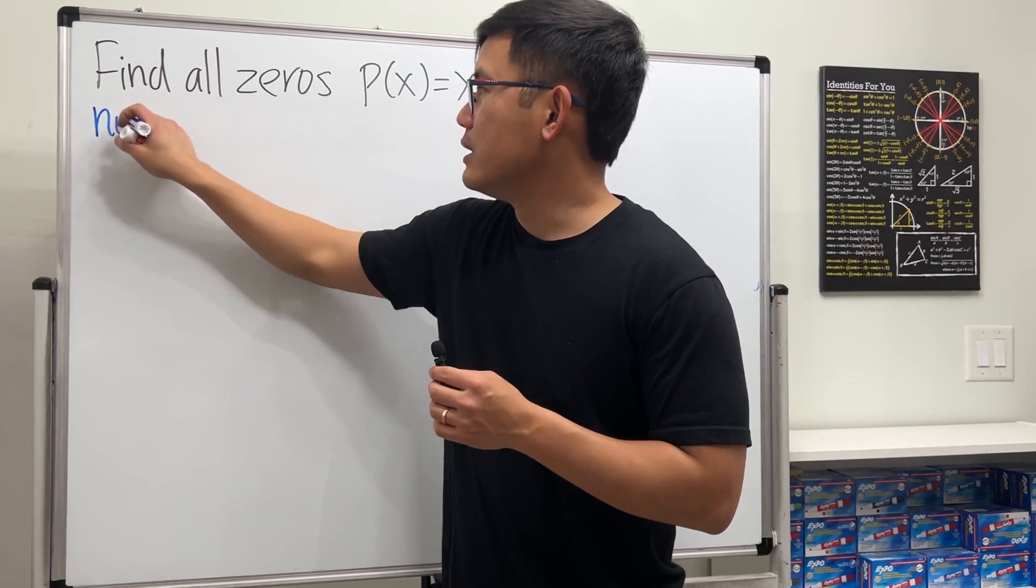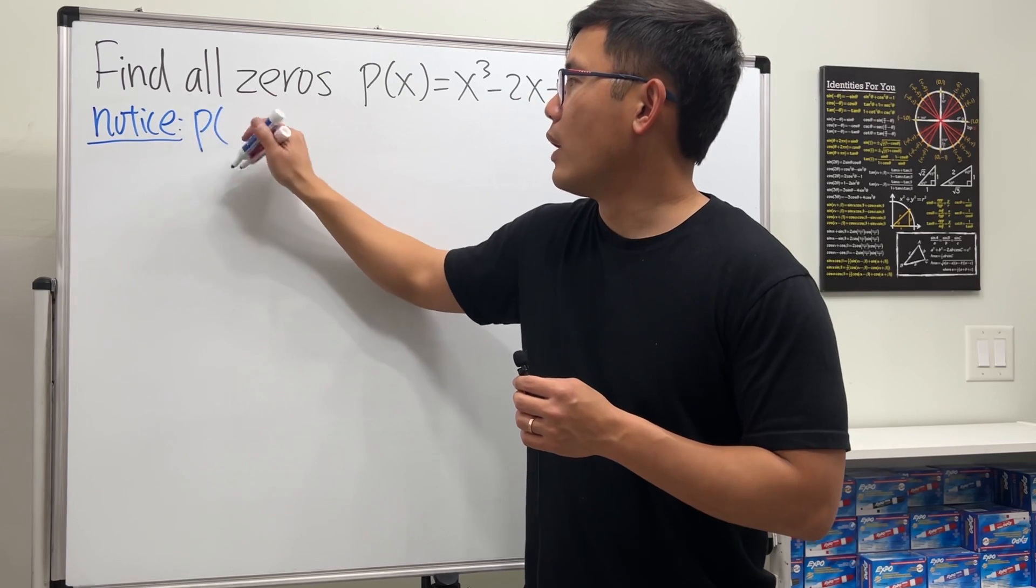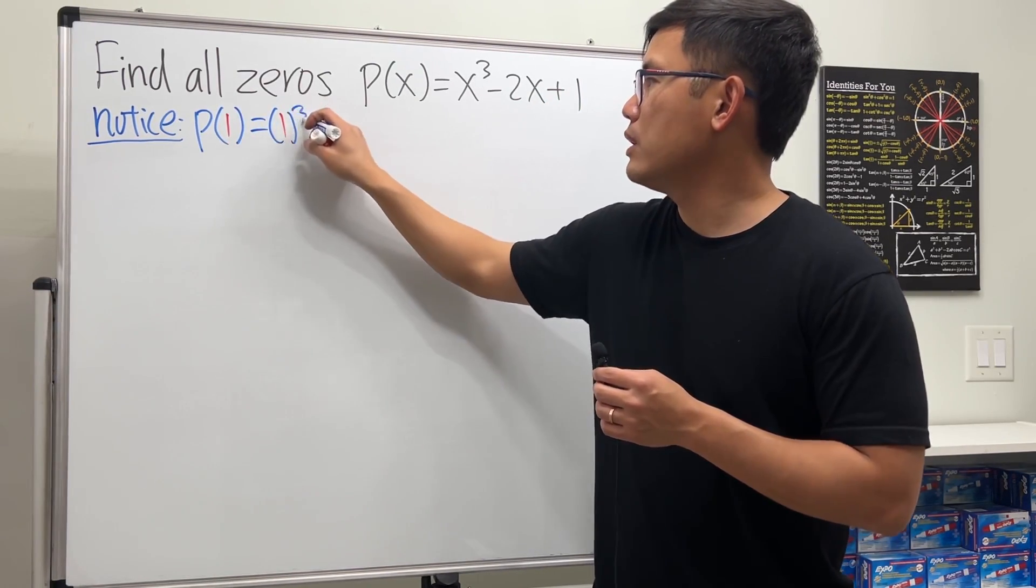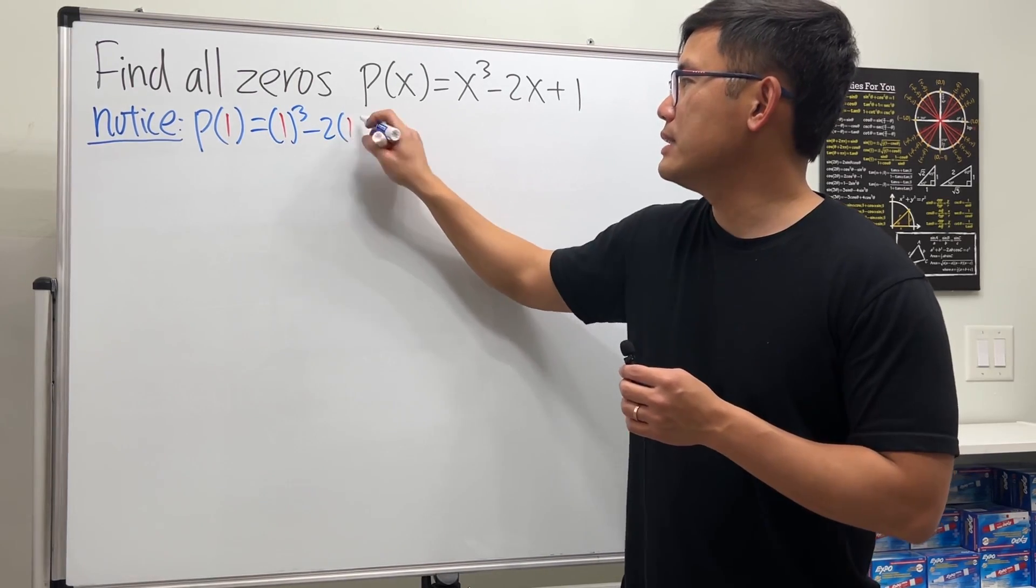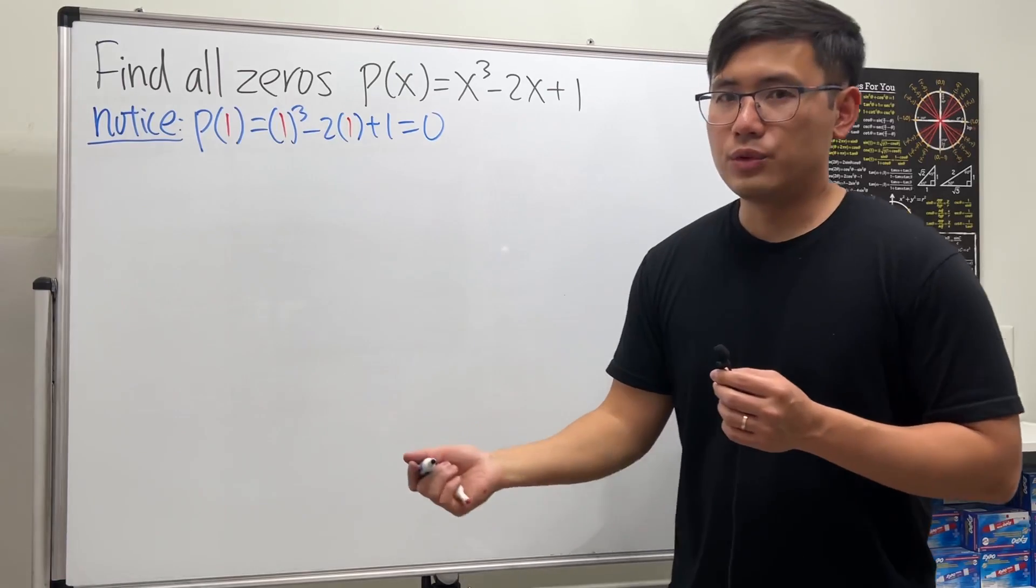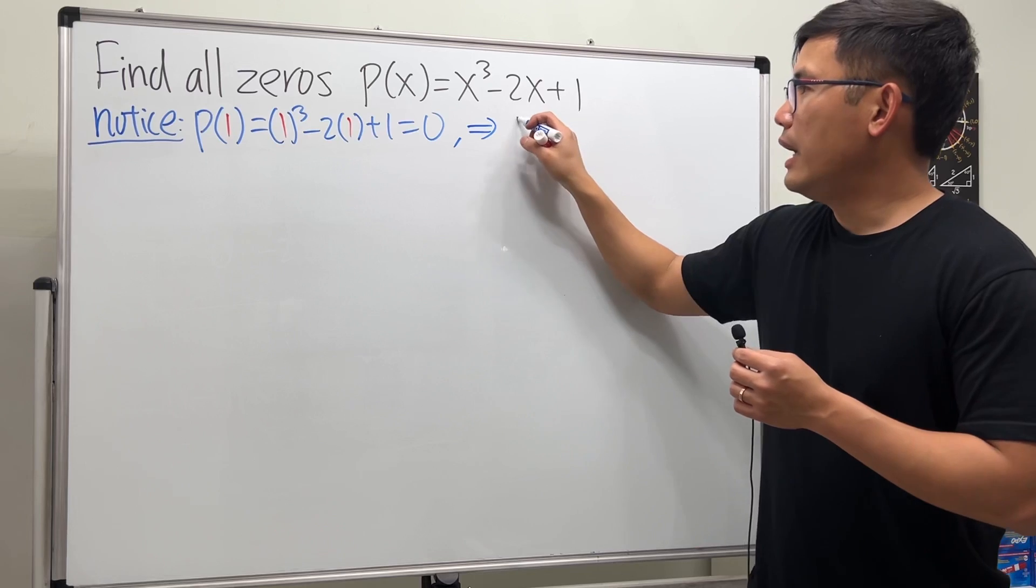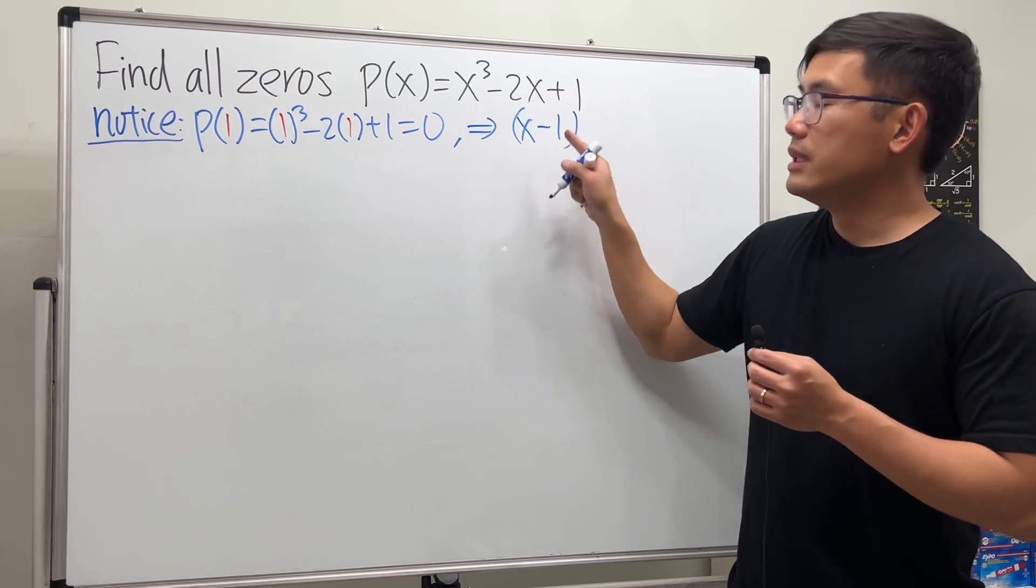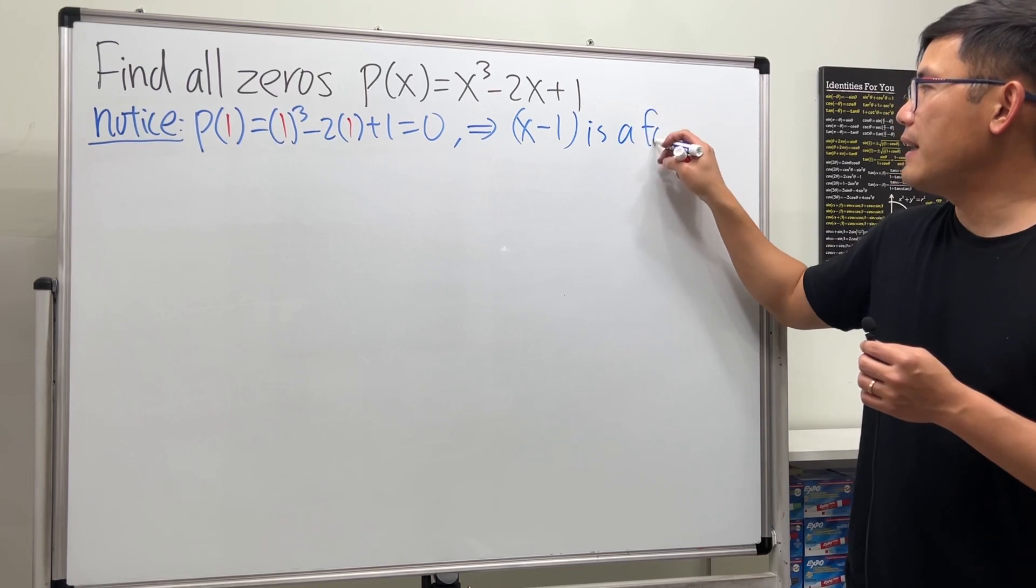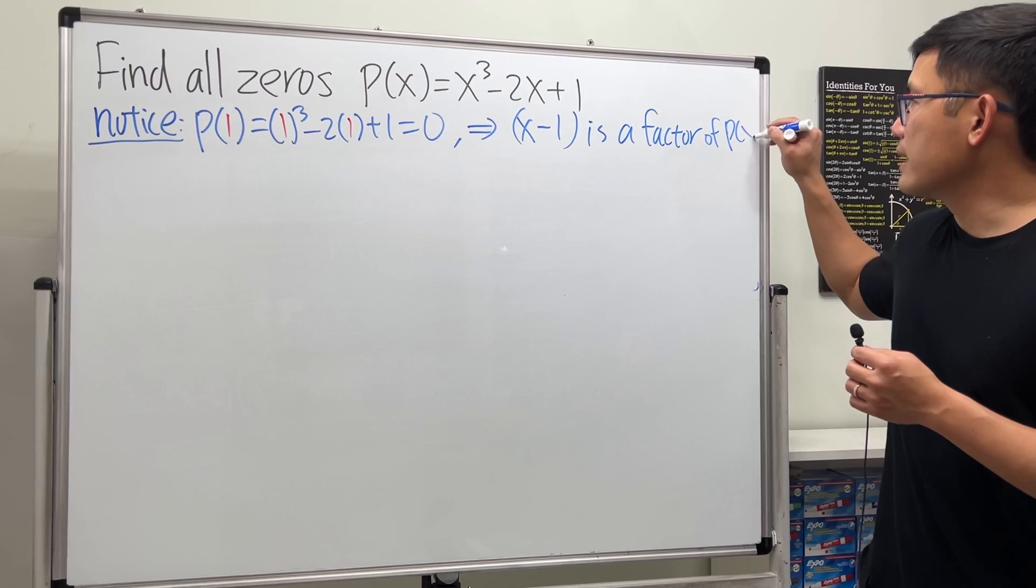Notice P(1), which is going to be zero, right? Because one to the third power minus two times one plus one, this is zero. So one is a zero, and this means x minus one is a factor of P(x).